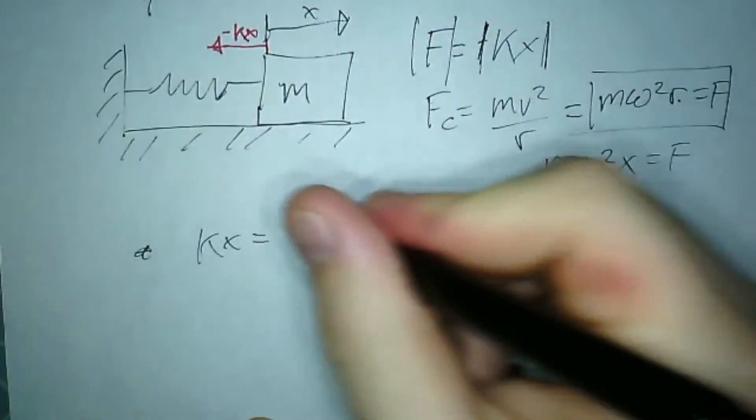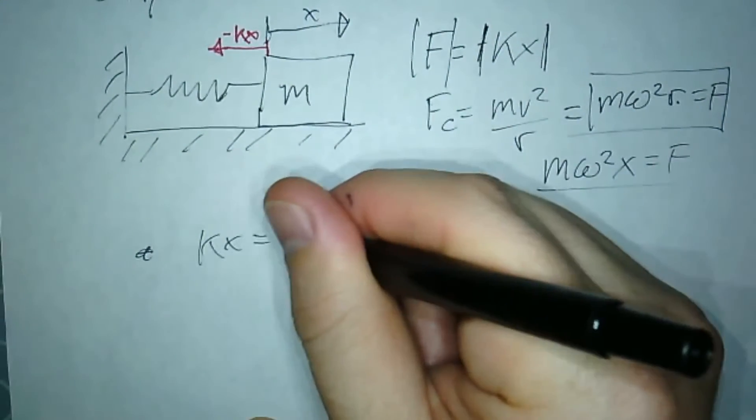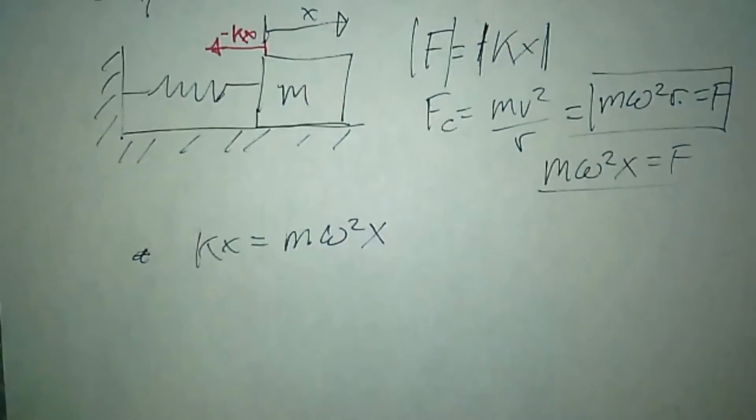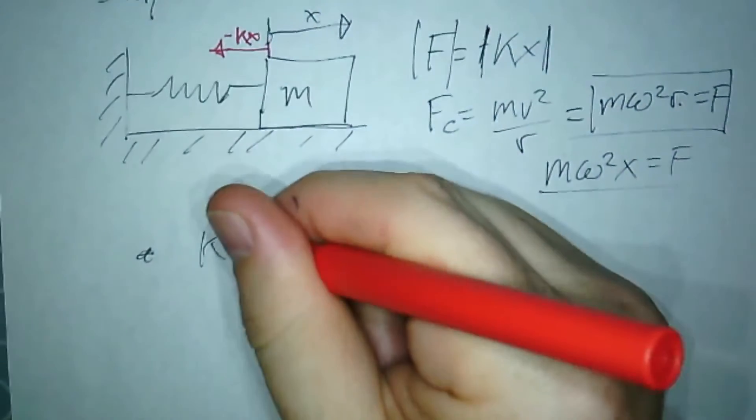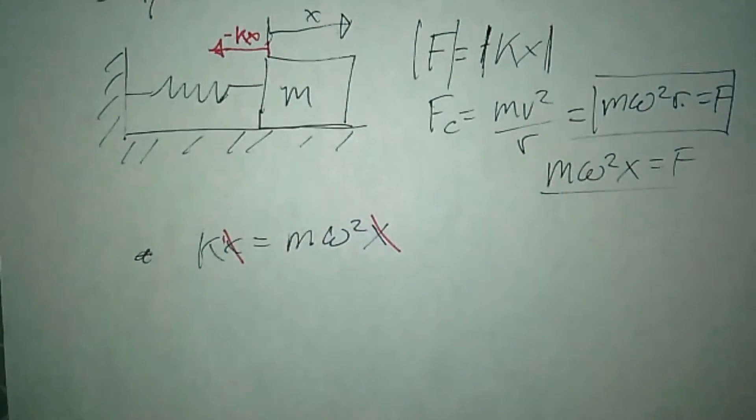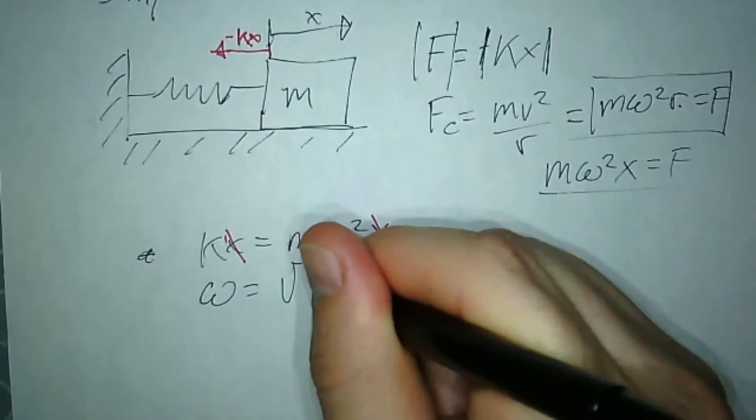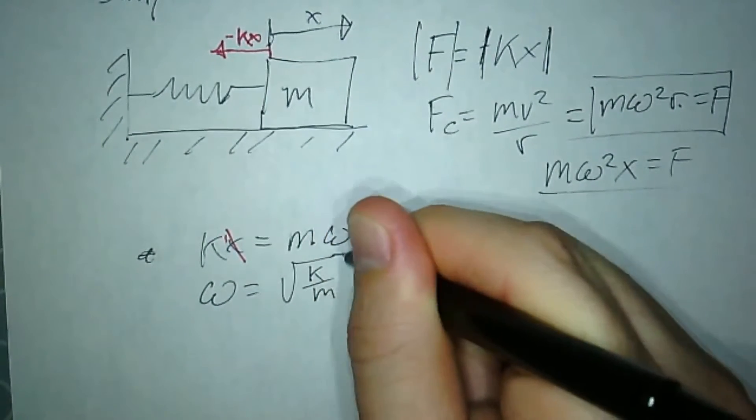kx equals mω²x. Since we're doing magnitudes, I'm not working with signs. The x's cancel right away, so ω = √(k/m).